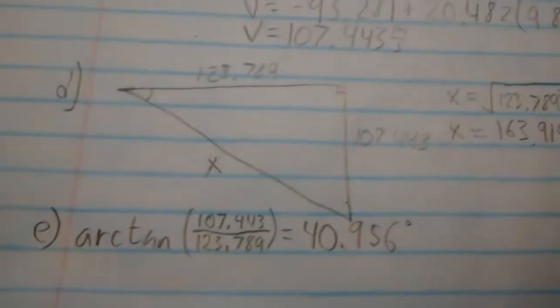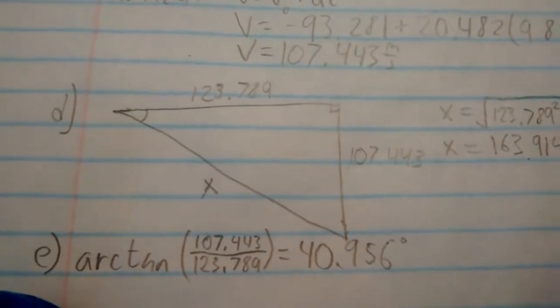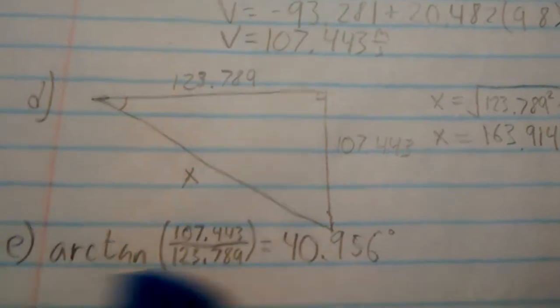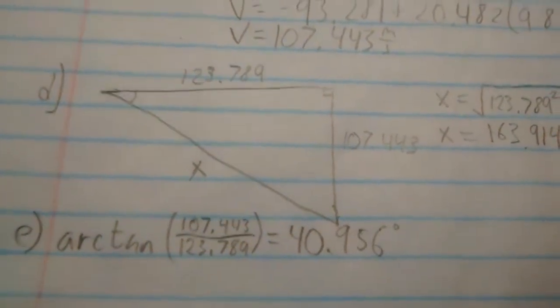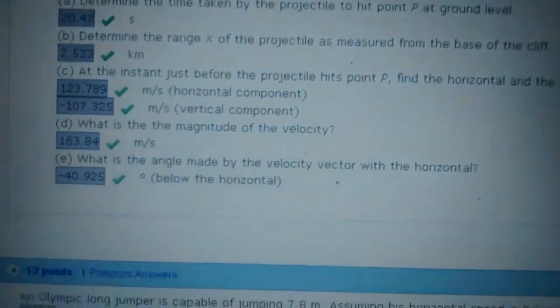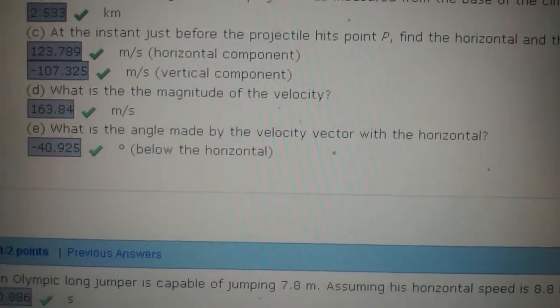Okay. So I think we finished it. I don't know. Maybe I can fit in the last problem in this video. Or, I don't know. Should I start a new video for the last problem? What's the last problem? The angle. I can do the angle really quickly. Okay. So the last question, Part E. What is the angle made by the velocity vector with the horizontal? Okay. So we're looking for this right here. That angle.